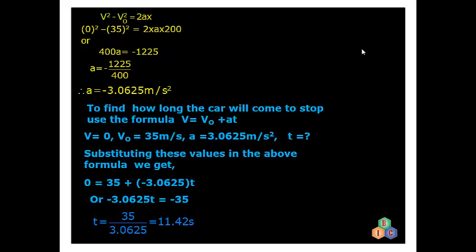In normal conditions, the car is stopped by slowly applying the brakes rather than abruptly. So the car takes some time to come to rest — in this case, 11.42 seconds. The final velocity of the car becomes zero after 11.42 seconds. This is a very important five-mark problem in motion in a straight line. Practice this problem well.